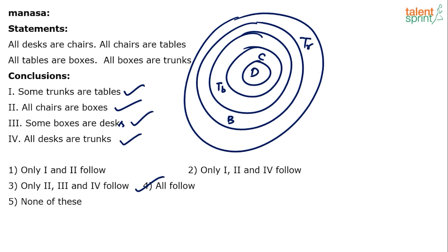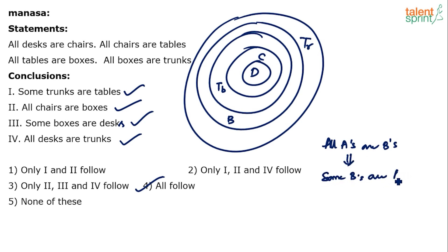Remember, for all As are Bs, the definite conclusion is some Bs are As. I think two of the conclusions here are in that form. Some trunks are tables — we know that all tables are trunks, because all tables are boxes and all boxes are trunks. So we can say all tables are trunks, and therefore some trunks are tables.